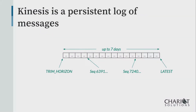Let's talk about what a Kinesis stream is — it's a persistent log of messages. It lives in the middle space of messaging between traditional message queues on one end, where you put messages in, pull them out, one consumer grabs a message and it's done, and Pub-Sub on the other end, where multiple consumers can read messages, but if you're not subscribed when the message is put in, it's gone. Kinesis messages are persisted.